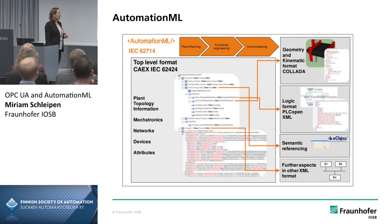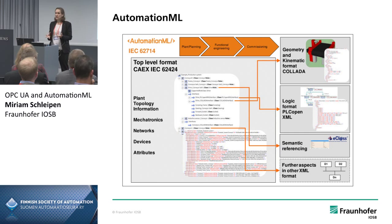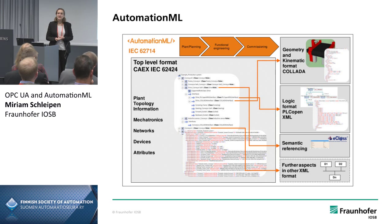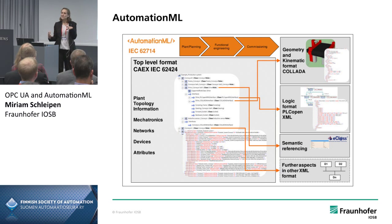With AutomationML you have a semantic description of your plant. You can describe plant topology information — for example, your communication networks, logical networks, physical networks, the attributes of your components, and also things like geometry information for an existing robot. AutomationML does not define any new XML format, but builds on different existing standardized XML formats and just defines rules for how to use and combine them. So the AutomationML IEC standard is not a long specification — only some pages to read.